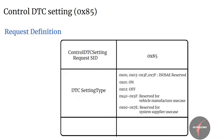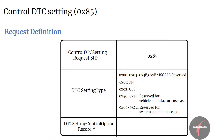There is an additional optional data parameter after the sub-function parameter called DTC Setting Control Option Record. This parameter is an optional record transmitted by the client when controlling the updating of DTC status bits to the server. This could include a list of DTCs to be turned on or off, etc.